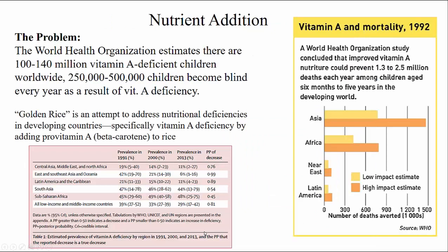Another use for genetically modified organisms is nutrient addition. There is a huge problem worldwide with vitamin A deficiency in young children, which can actually lead to death or blindness. Rice actually has the ability to produce vitamin A, except it has a few genes missing that are required for it to turn this on in the kernel of the rice.